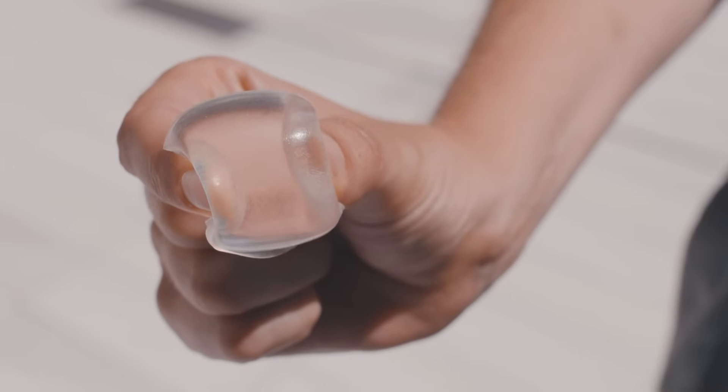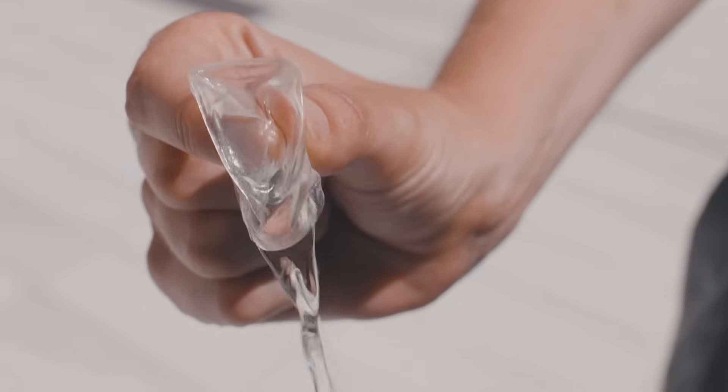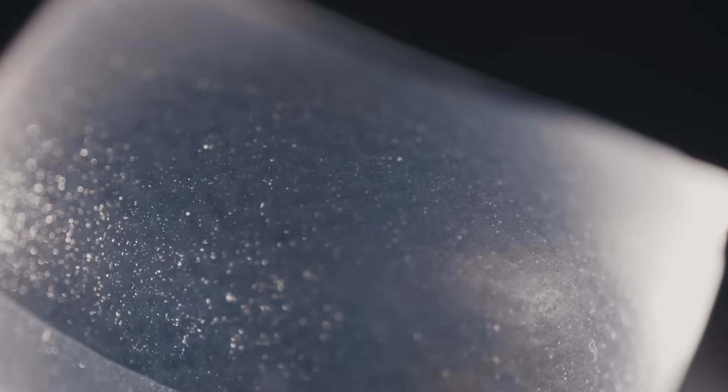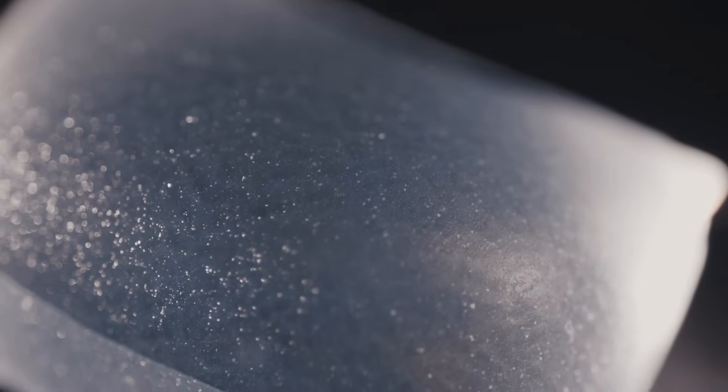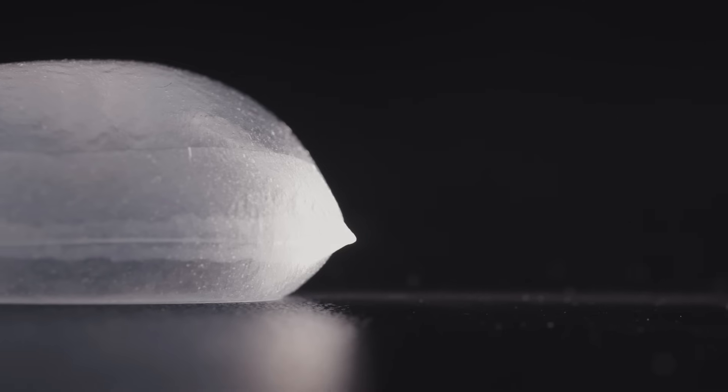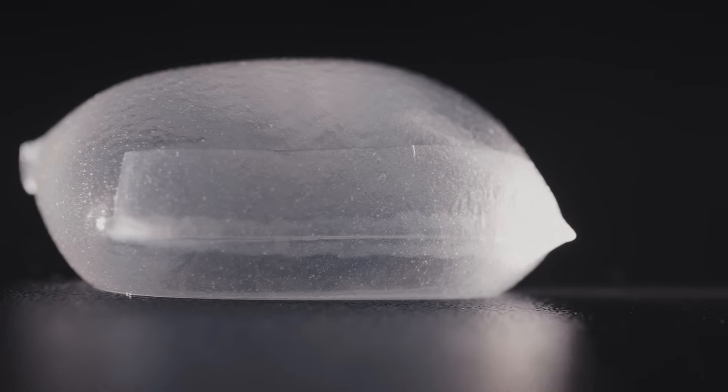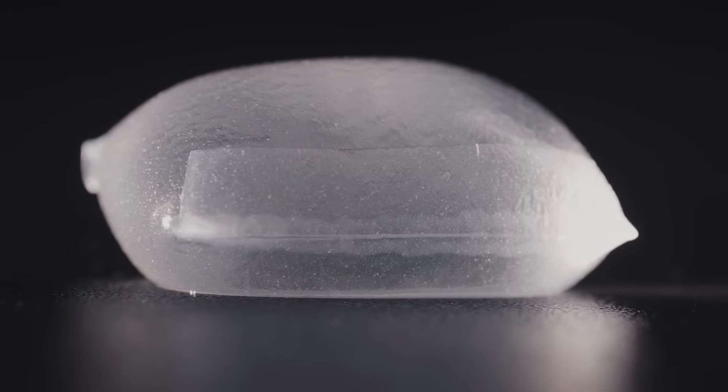They've just signed a contract with a food delivery service to do their ketchup sachets, which is just such a brilliant idea. So if Skipping Rock's Lab can find a way to turn seaweed into a water bottle, what other ways could we think of to creatively approach the plastics problem that we're facing now?